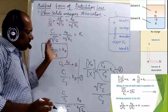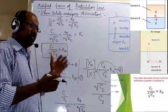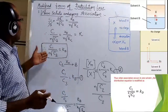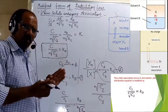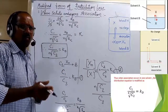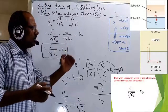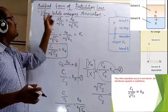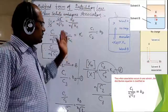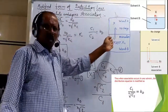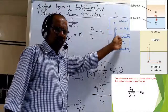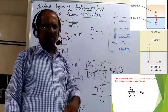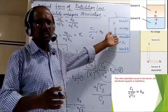This is the modified form whenever the solute molecules undergo association in one of the solvents. The equation is C1 upon nth root of C2 is equal to K. This is the modified form of the distribution law whenever solute molecules show association in one of the solvents. The total concentration is considered experimentally as the concentration of the associated molecules.